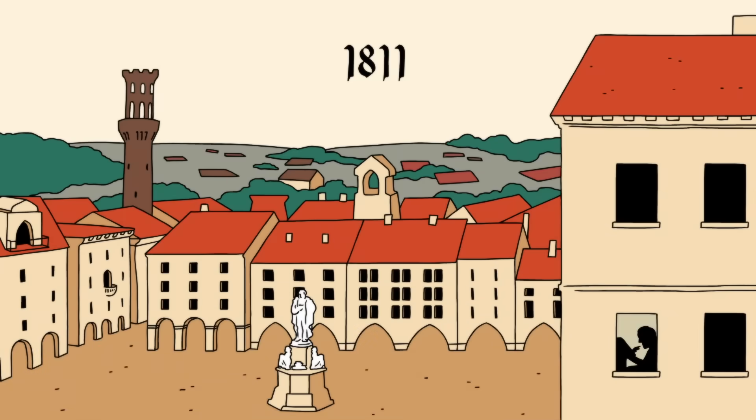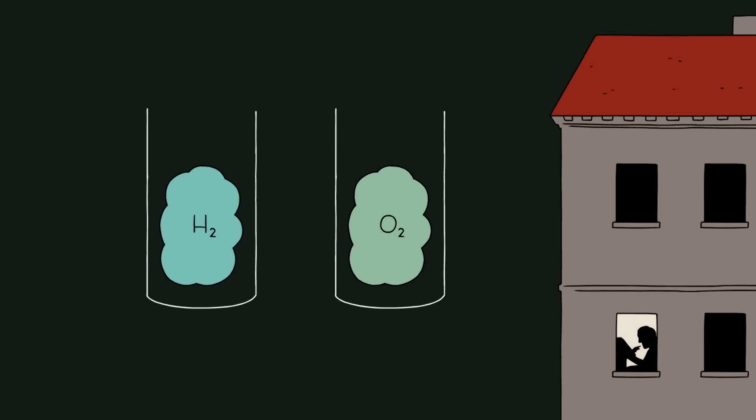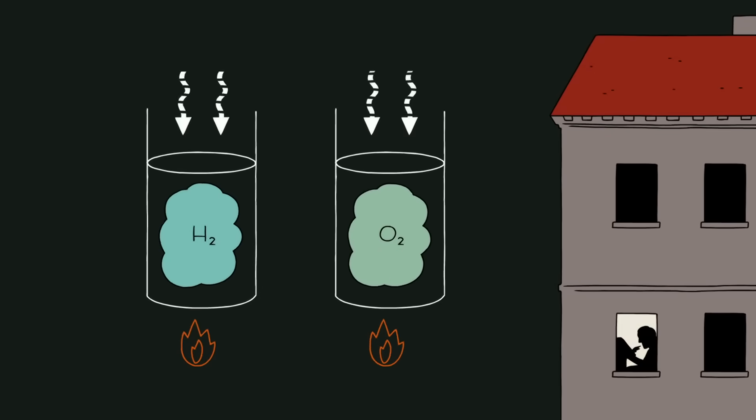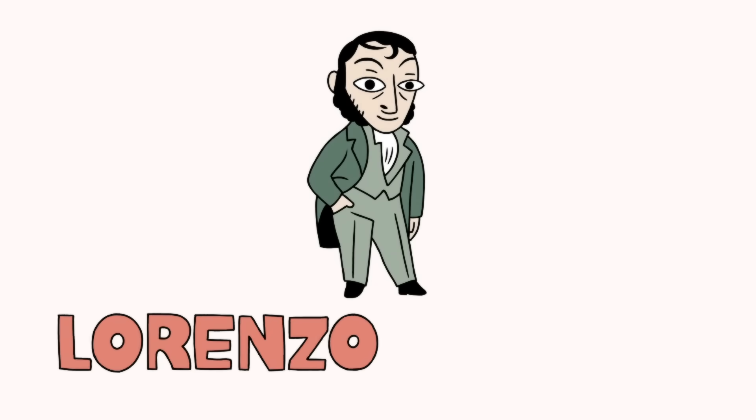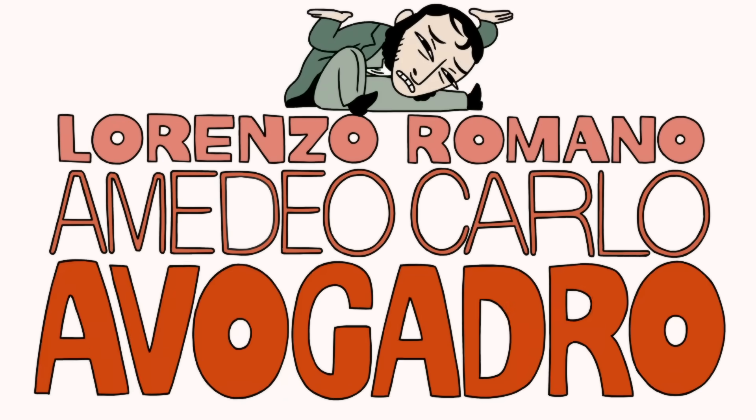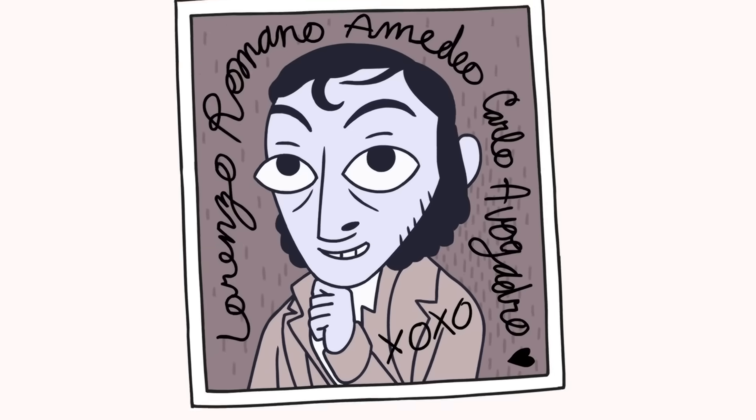Well, in 1811, someone had an idea that if you have equal volumes of gases at the same temperature and pressure, they would contain an equal number of particles. His name was Lorenzo Romano Amadeo Carlo Avogadro. I wonder how long it took him to sign autographs.